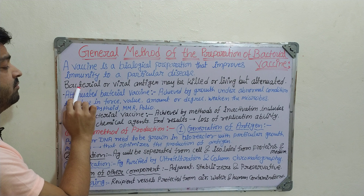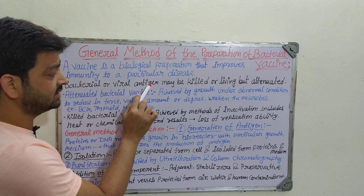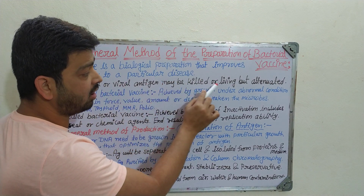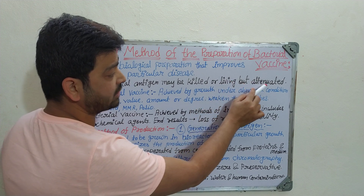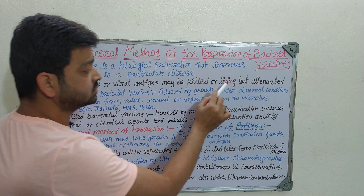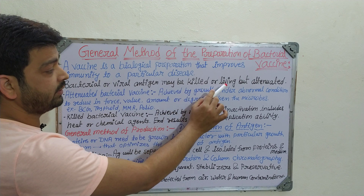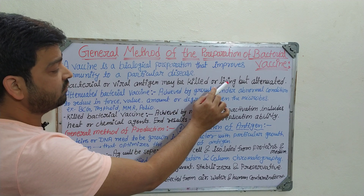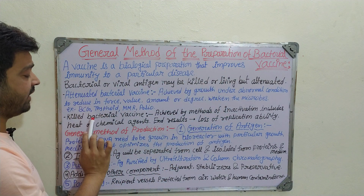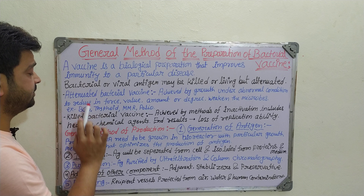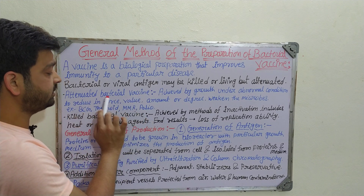The bacterial or viral antigen used in vaccines may be either killed or living, but if living, it will be attenuated — meaning inactivated. There are two types of bacterial vaccines: attenuated bacterial vaccines and killed bacterial vaccines.